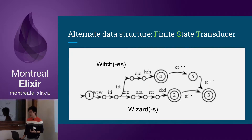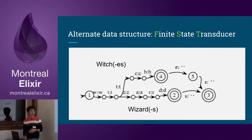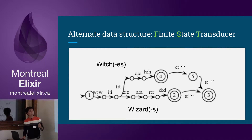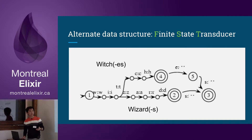So we can use a finite state transducer, which is what NLP people use as a textbook method for lemmatization. Basically it's just like a finite state machine, but at each state you take a letter and return a letter at the same time. If you follow the path on the top, you have 'witch', and when you hit 'ES' we just return nothing — we remove the suffix. And by having words share a single route up to a point, we save a lot of space.